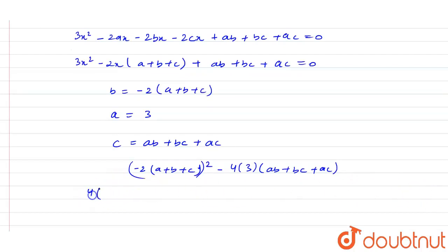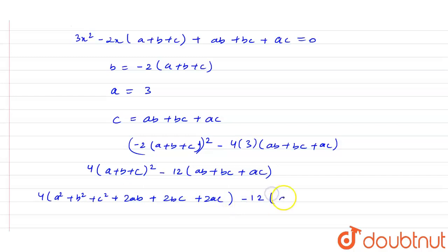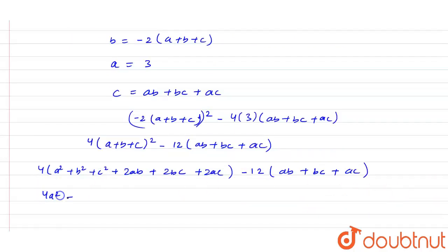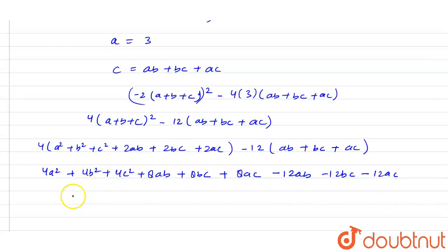This becomes 4(a + b + c)² - 12(ab + bc + ac). Expanding: 4(a² + b² + c² + 2ab + 2bc + 2ac) - 12(ab + bc + ac), which gives 4a² + 4b² + 4c² + 8ab + 8bc + 8ac - 12ab - 12bc - 12ac.